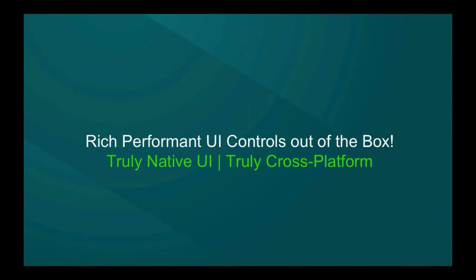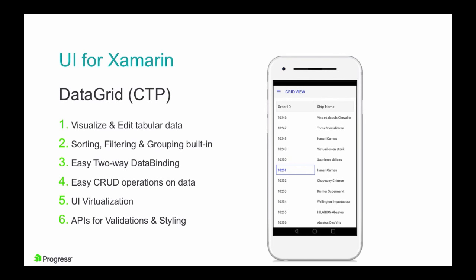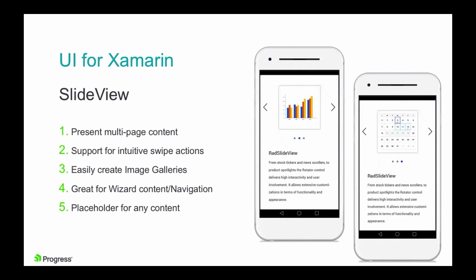Let's take a look at what Telerik UI for Xamarin can do for you in this release. We have a couple of new controls we're excited about. First is a data grid — everybody keeps asking for a data grid because line-of-business apps need data grids. It's still in CTP but it's polished. It's for you to visualize, edit, and present tabular data, with all the things you'd expect: sorting, filtering, grouping, easy data binding for CRUD operations, virtualization for large data sets, and styling and validation support. Next is the slide view, which helps you present multi-page content such as image galleries or wizard flows where the user swipes left and right.